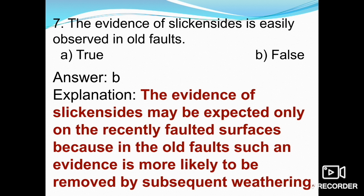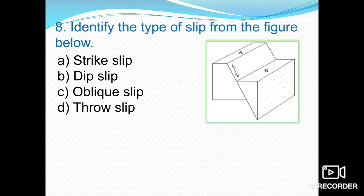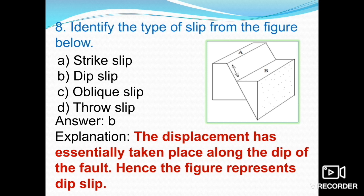The next question asks: from the figure given, identify the type of slip — whether it is strike slip, dip slip, oblique slip, or throw slip. If you studied BSc-level geology you would have studied the types of slips. This figure represents dip slip — the displacement has essentially taken place along the dip of the fault. Other slips include strike slip, which means the slip is along the strike of the fault, as well as oblique slip. The answer is dip slip, option B.